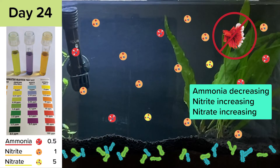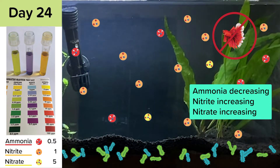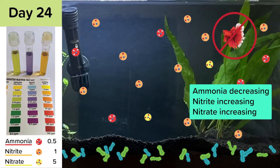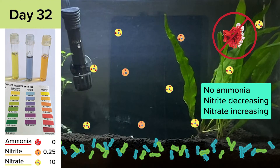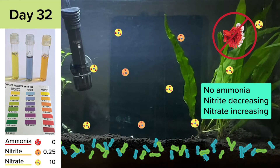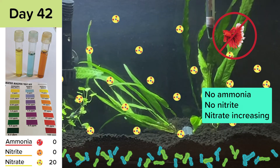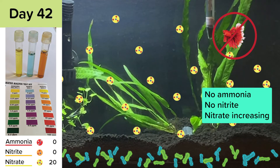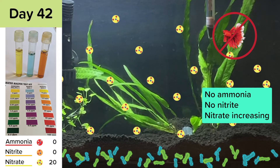By day 24, ammonia is decreasing, nitrite is still increasing, and now nitrate levels are rising. By day 32, ammonia has gone down to zero, nitrite is decreasing, and nitrate is increasing. And by day 42, ammonia and nitrite have gone down to zero, and nitrate is still rising.